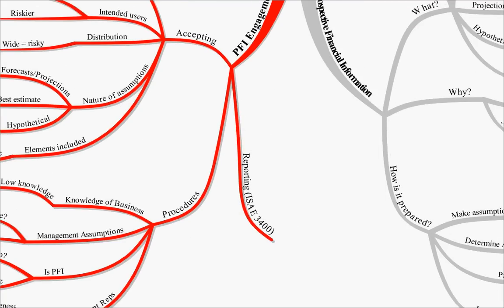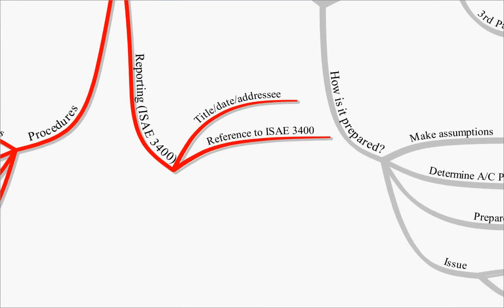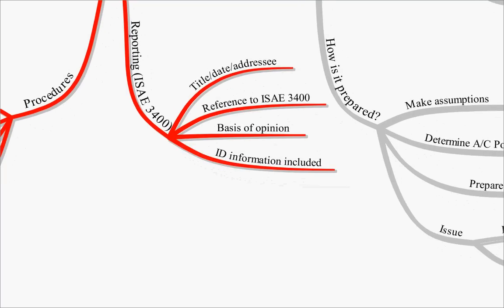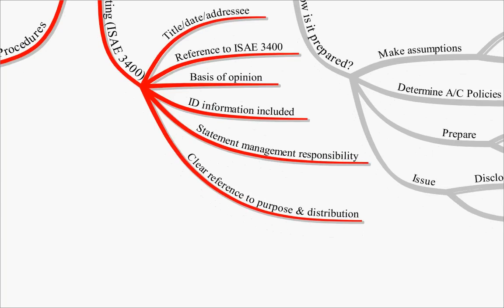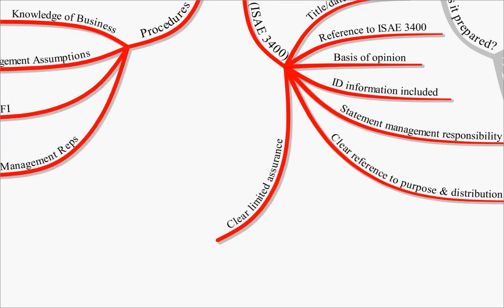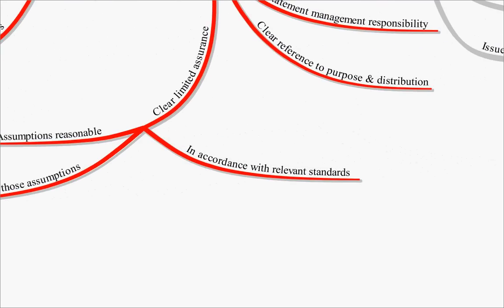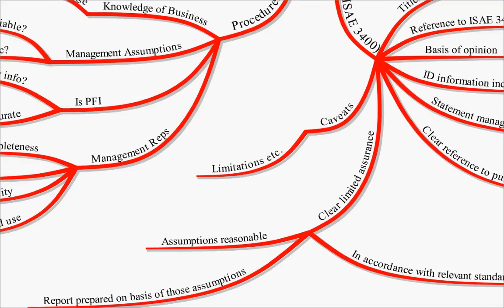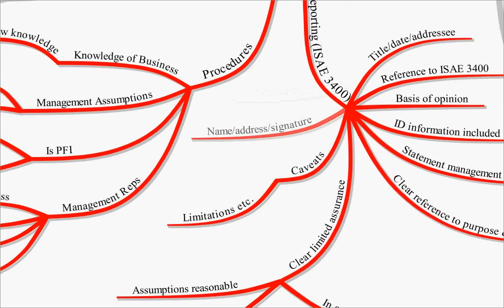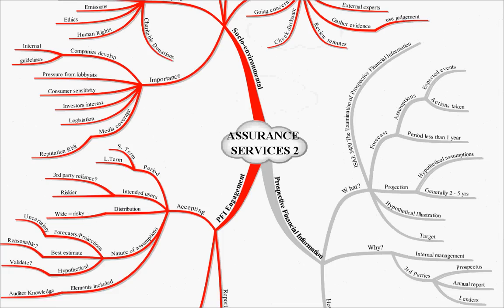Reporting under ISAE 3400 - you need to have the title, the date, and the addressee, reference to that standard, the basis of your opinion, the information being included, and a statement of management responsibility. It'll also make clear reference to the purpose and the distribution, basically to limit your liability. It'll give clear, limited assurance that the assumptions are reasonable, that the report has been prepared on the basis of those assumptions, and that it's been prepared in accordance with the relevant standards. If there are any caveats, you've got to put those in - for example, the limitations of audit procedures. And lastly, the name, address, and signature of the auditor. So that was a recap of our lecture on assurance services.